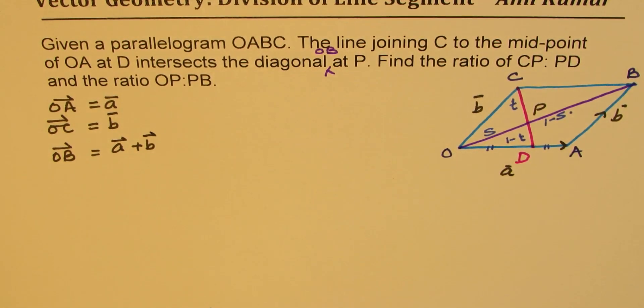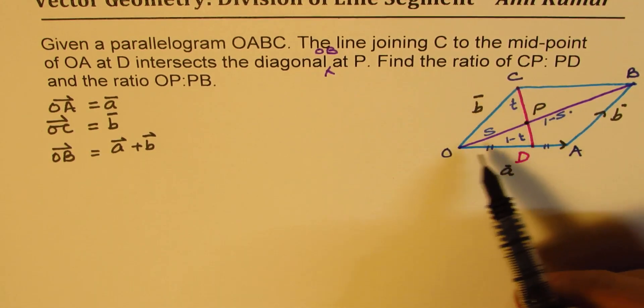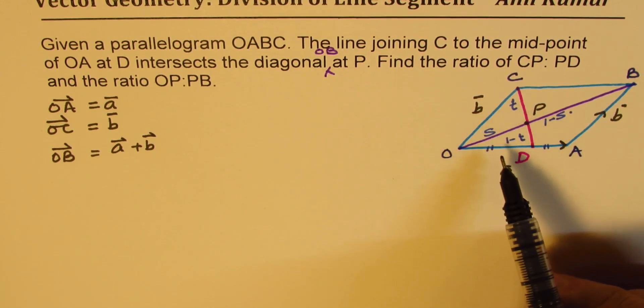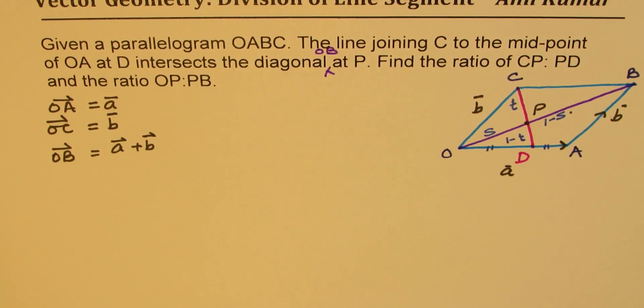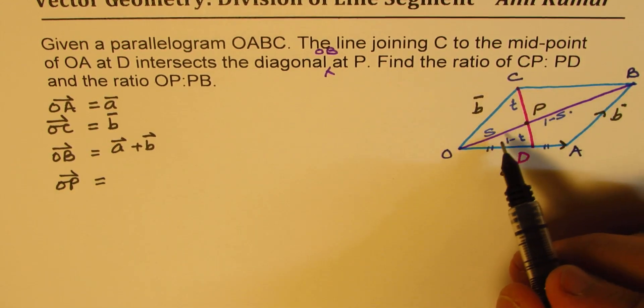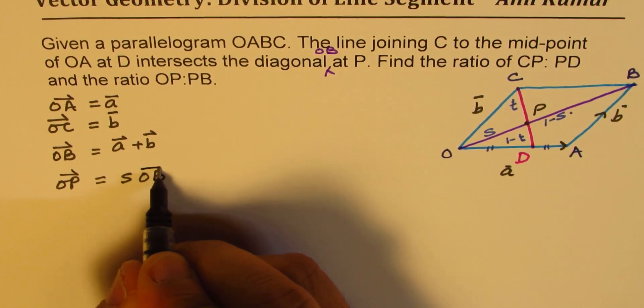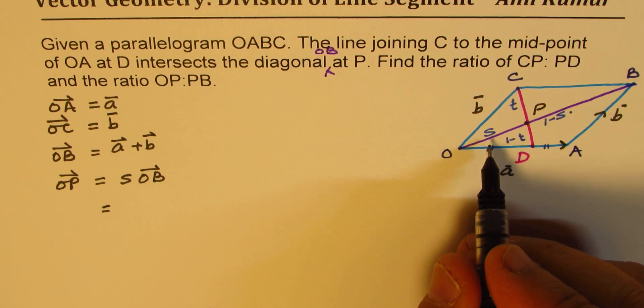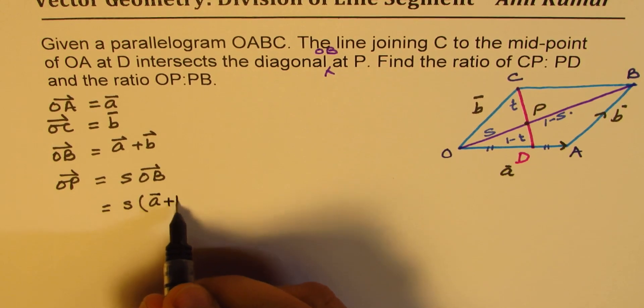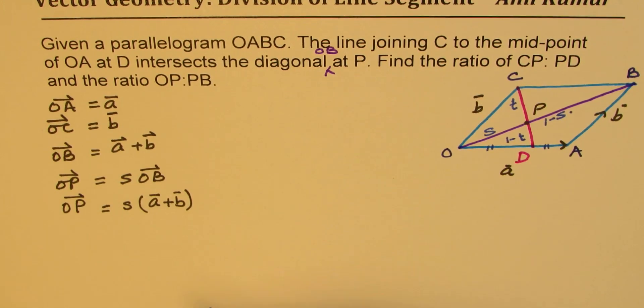Now, to find the ratio in which P divides these two line segments, we need to consider what is OP in two different ways, compare those equations, and then get the solution. That is the strategy. So first, let's write OP as a scalar multiple of OB, S times OB. So which is equal to S times the sum of vectors A and B. So we'll call this as our equation number 1.